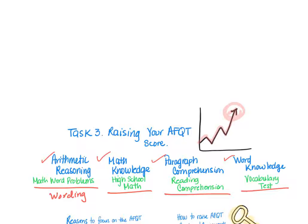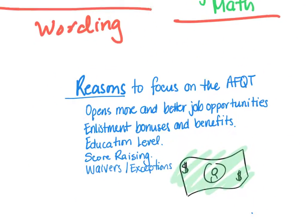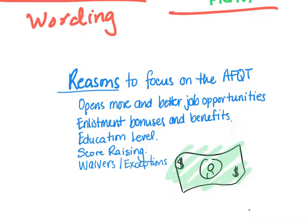Word Knowledge is essentially a vocabulary test — they give you academic wording and you need to show you know what those words mean. Now, you might ask: in Task One I told you to think about your composite score, so why focus on the AFQT? The reality is composite or line scores help you get a specific job, but if you're not 100% sure what you want, focusing on the AFQT is a winner because it opens up more and better job opportunities.